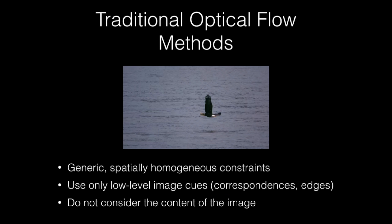Traditional optical flow methods do not consider the content of the image. Instead, they use low-level cues like correspondences or edges and make generic, spatially homogeneous assumptions.